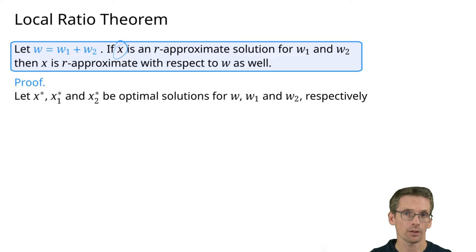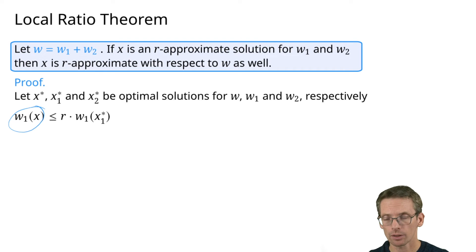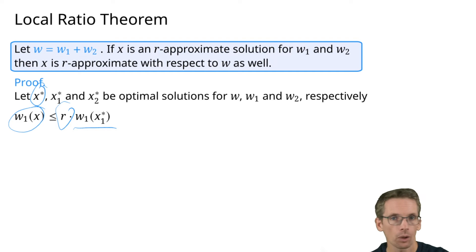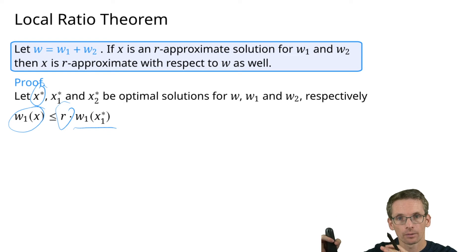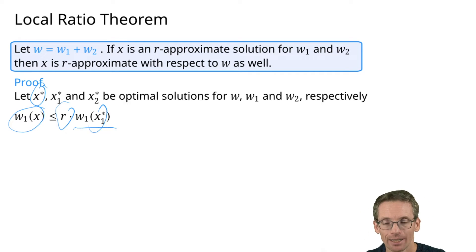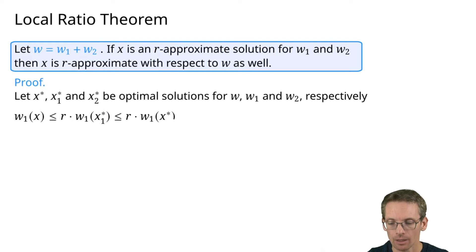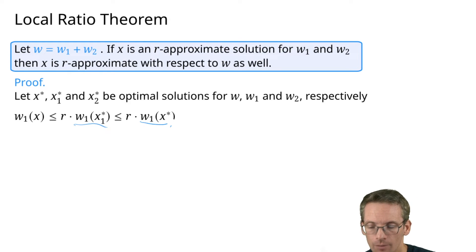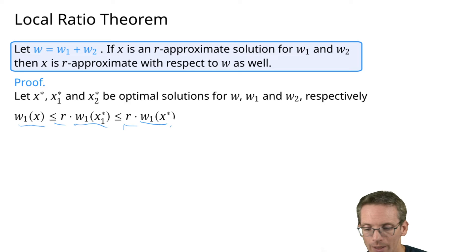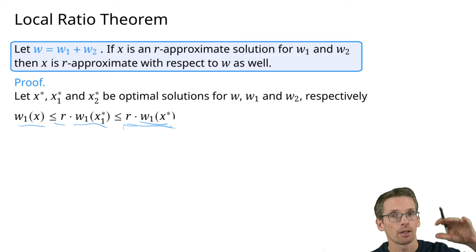To prove the approximation factor, let x* be the optimal for w, x1* optimal for w1, and x2* optimal for w2. Since our solution is an r-approximation on w1, we have w1(x) ≤ r · w1(x1*). But x* is also a feasible solution for w1, so w1(x1*) ≤ w1(x*). Therefore w1(x) ≤ r · w1(x*).